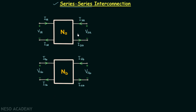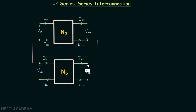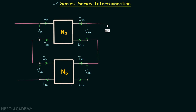These are our two 2-port networks. In order to have the series-series interconnection, I will join these two terminals of network NA and network NB, and I will also join these two terminals of network NA and network NB. For better understanding, I will extend these terminals.